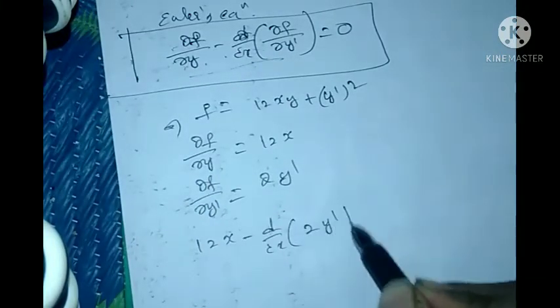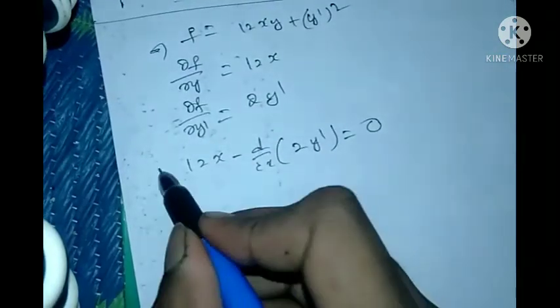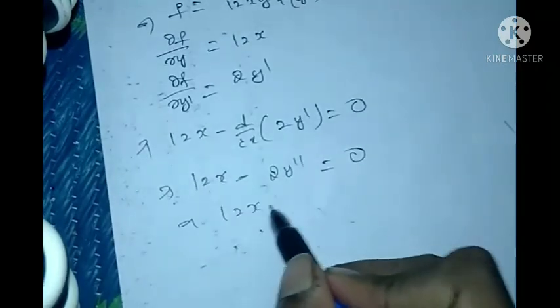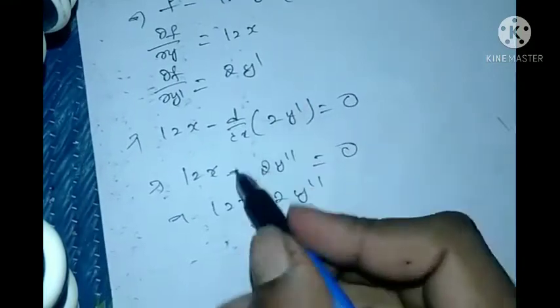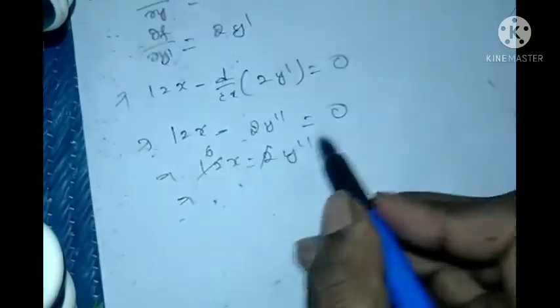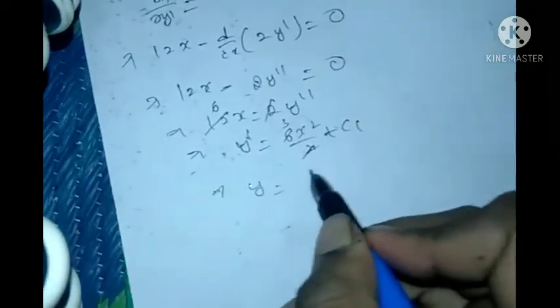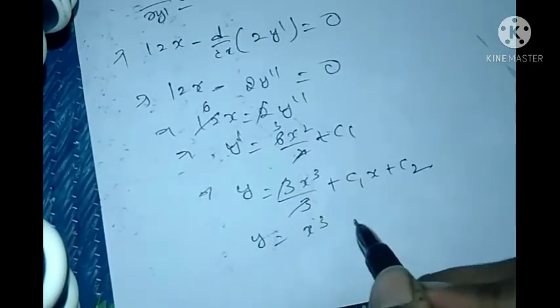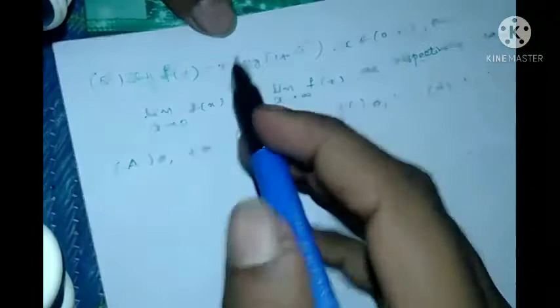Substituting into Euler's equation: 12x − d/dx(2y') = 0, giving 12x = 2y''. Integrating both sides: y' = 6x²/2 + C₁ = 3x² + C₁. Integrating again: y = x³ + C₁x + C₂. Comparing with the options, option A is y(x) = x³ + C₁x + C₂, which matches. Therefore option A is the correct answer.